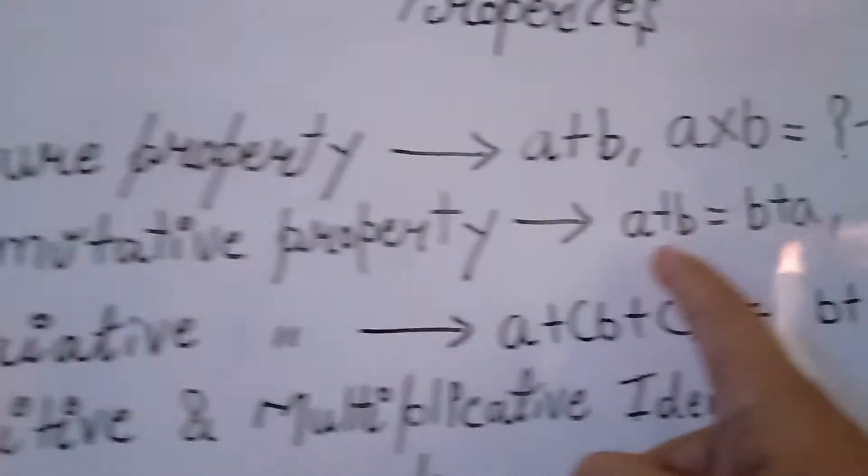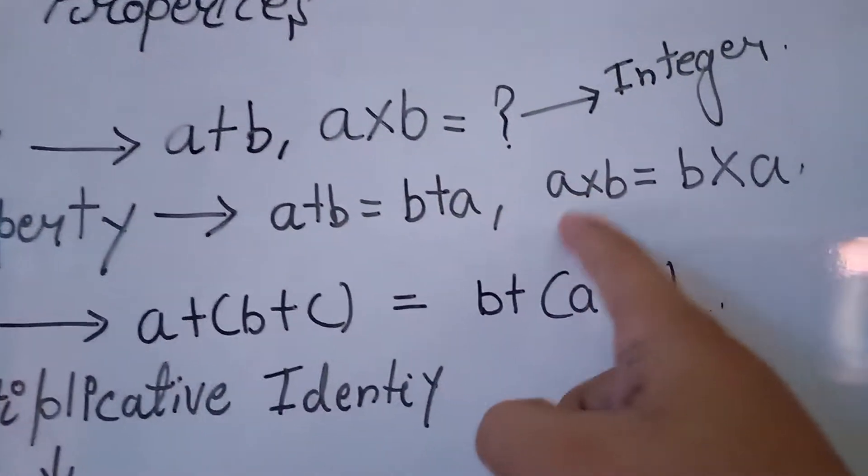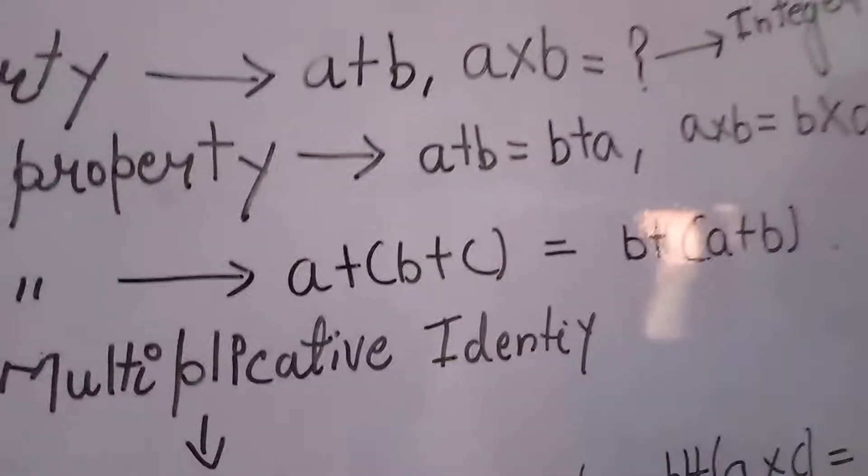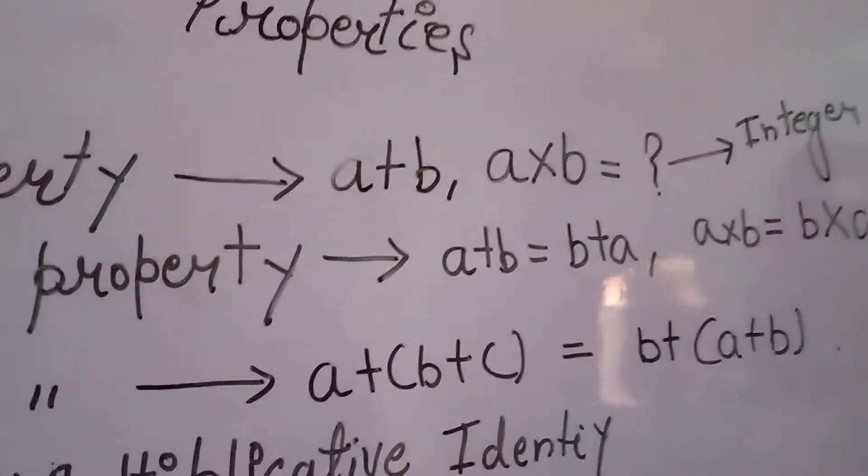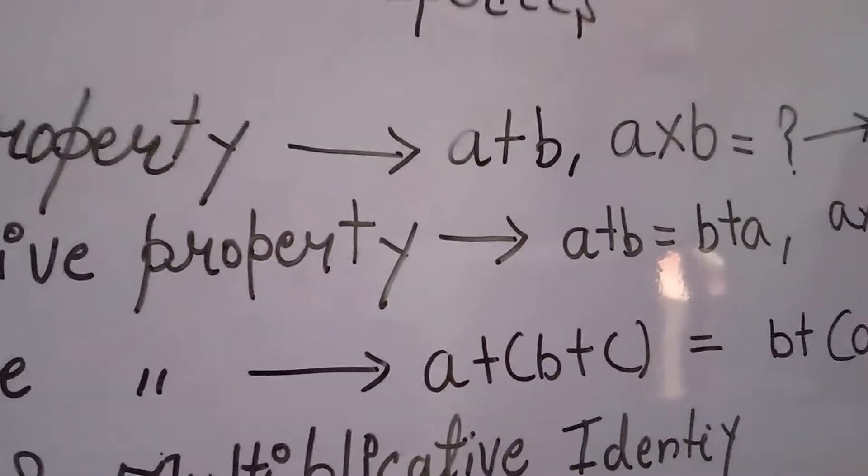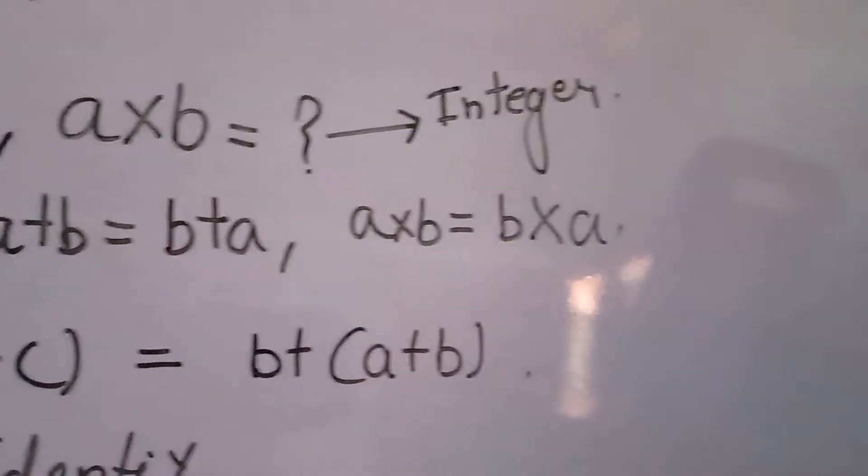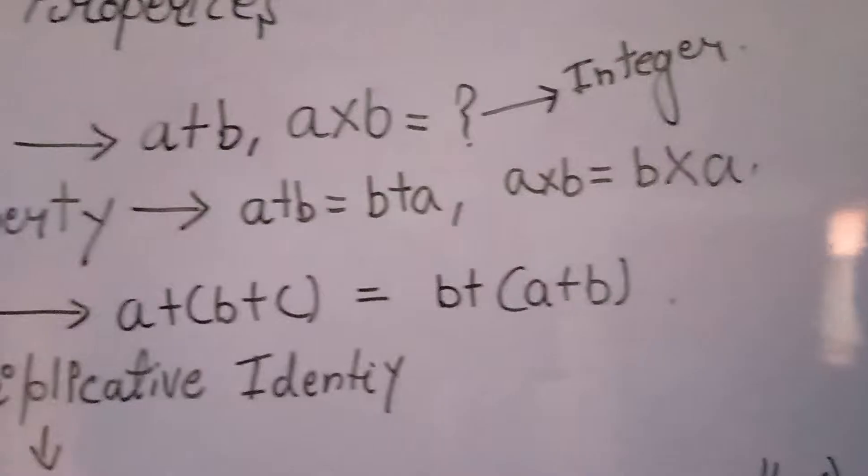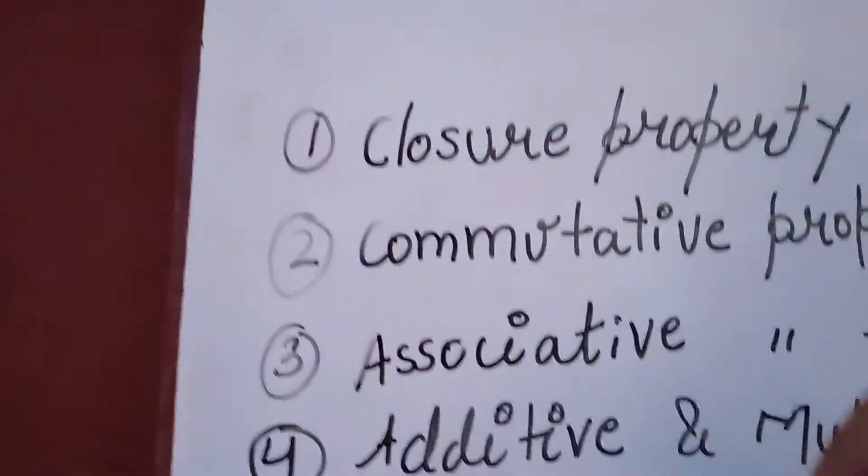Commutative property: a plus b is equal to b plus a, a into b is equal to b into a. This means whether you add a and b or b and a, whether you multiply a and b or b and a, the answer will be the same. This shows the commutative properties of integers.